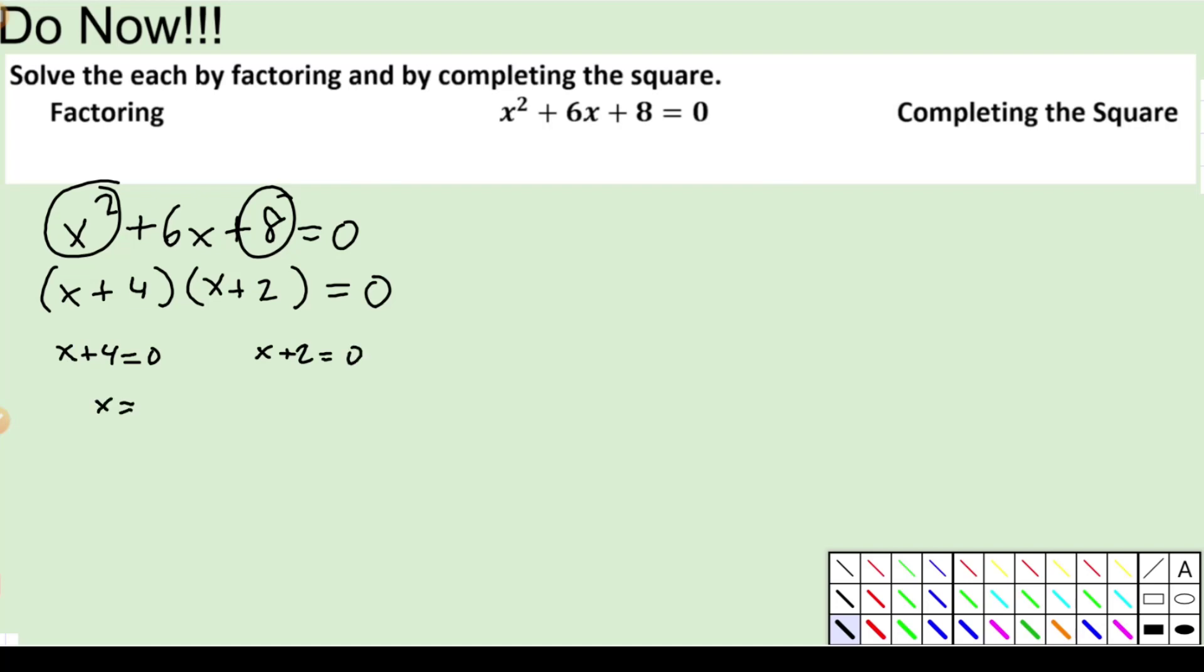The other one is x plus 2 equals 0. And we're going to solve this and we'll get negative 4, or my other answer is going to be x equals negative 2. So we've solved this problem by factoring.